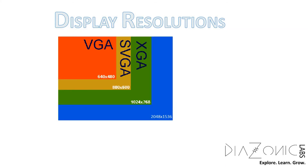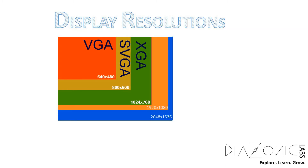The maximum resolution achievable with this interface is 2048x1536 at 85Hz, which is pretty good by today's standards. Comparatively, the popularly known Full HD resolution today is 1920x1080 pixels — what you call 1080p or Full HD. So if you look at the display interface, the maximum resolution supported by VGA is still greater than Full HD.